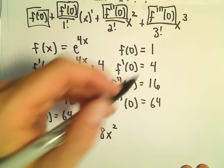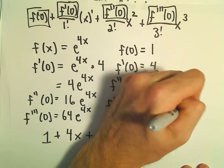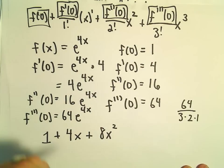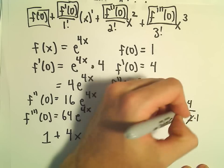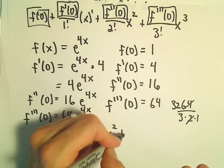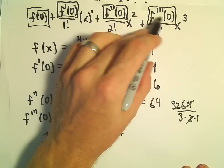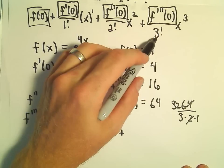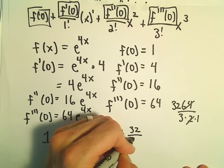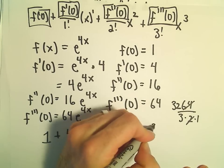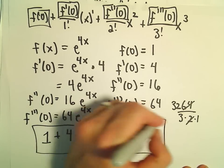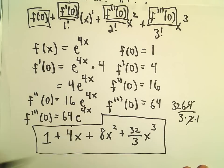f'''(0) = 64, so 64/3! equals 64/6. We can reduce that to 32/3, then multiply by x³. This gives us our degree 3 Maclaurin polynomial: 1 + 4x + 8x² + (32/3)x³.